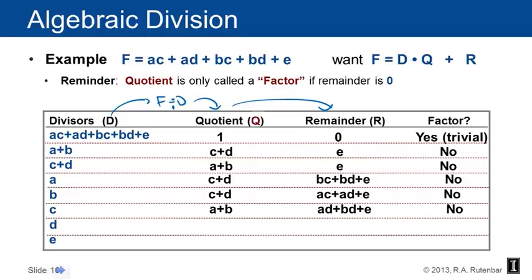If I divide by c, I get a plus b as the quotient, ad plus bd plus e. No, it's not a factor because it's got a big remainder. If I divide by d, I also get a plus b, with ac plus bc plus e as the remainder. Not a factor. If I divide by e, it turns out I just get one because there's not very much I can do and the remainder is the entire f.